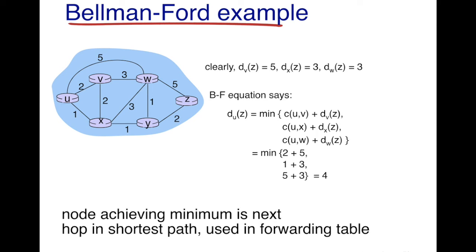To determine the least cost path from u to z, we find the paths through each neighbor and take the minimum. Going through v: cuv is 2 and dvz is 5, so the cost is 7. Going through x: the direct cost from u to x is 1 and dxz is 3, giving a cost of 4. Going through w: the direct link cost is 5 and the path from w to z is 3, giving a total of 8. The minimum is 4, achieved by going through x.